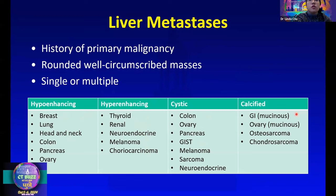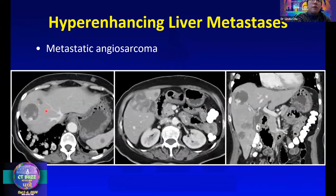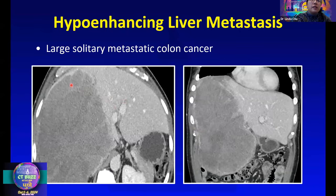Calcified metastases tend to come from mucinous GI or ovarian primaries, or from bone tumors. Here's a case of metastatic cholangiocarcinoma with the classic targetoid appearance — a brighter peripheral enhancing rim and central hypoenhancement. This target appearance is characteristic of metastatic disease, and you can appreciate the sheer tumor burden on cinematic rendered images. Here's a case of metastatic angiosarcoma — superficially it might look like hemangiomas, but the lung metastases in the lung bases give away the diagnosis. Sometimes liver metastases can grow to be very large, like this large solitary colon cancer met that could initially fool you into thinking it's a primary liver lesion.